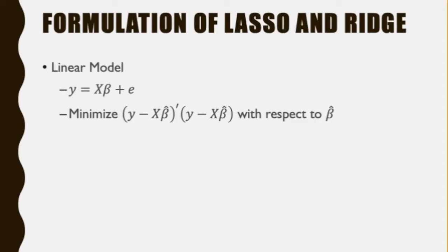To understand the formulation of Lasso and Ridge regression, we should start from a linear model y = Xβ + e, where e is the unobservable error term. The linear model estimator of beta should then minimize (y - Xβ̂)ᵀ(y - Xβ̂) with respect to β̂, which is the estimator of the regression coefficients β.